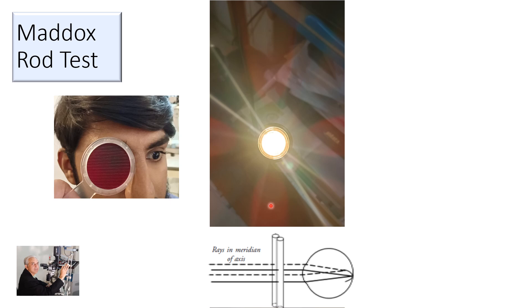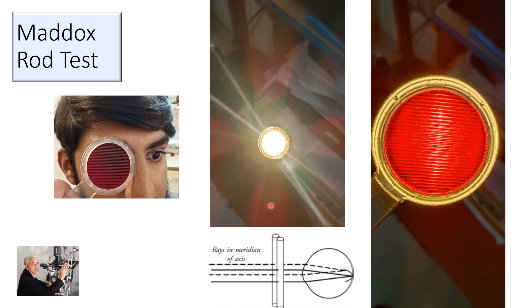What you need to do is have both eyes open and then ask the patient to look through the right eye with a Maddox rod in front of the eye.